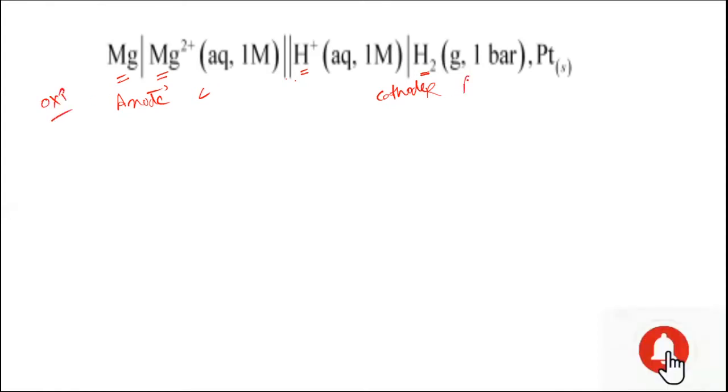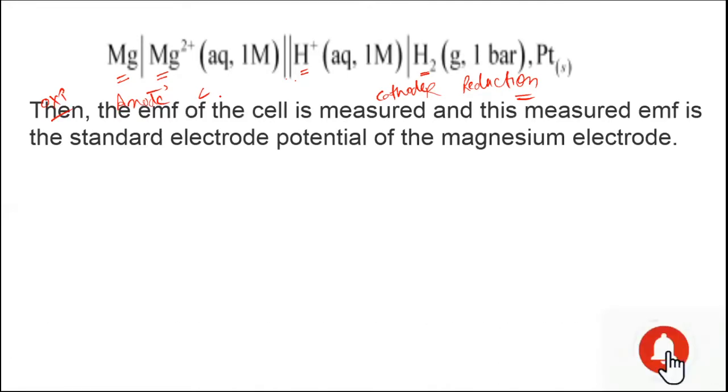When we set up this cell, potential is developed. That potential is only due to the magnesium rod, because the value of the standard hydrogen electrode or EMF value of the standard hydrogen electrode is zero. Now the EMF of the cell is measured, and this measured EMF is the standard electrode potential of the magnesium electrode.